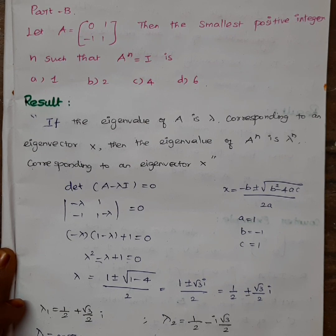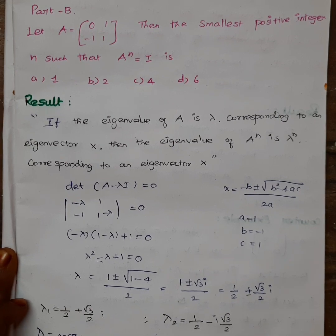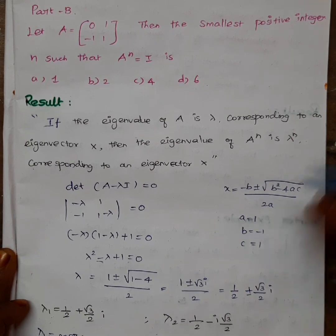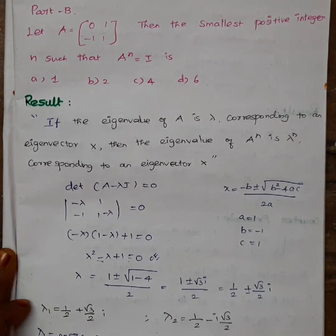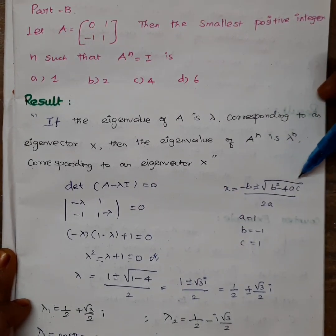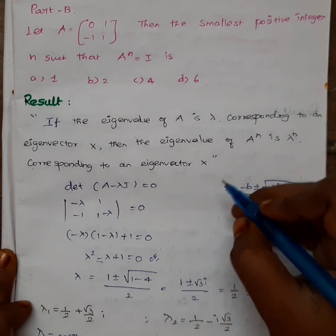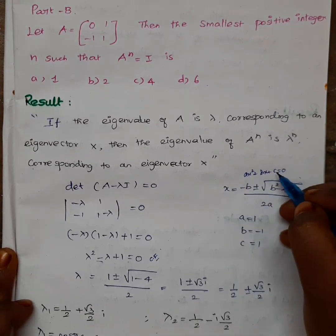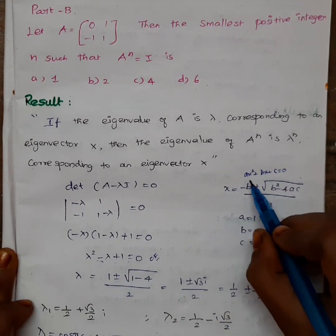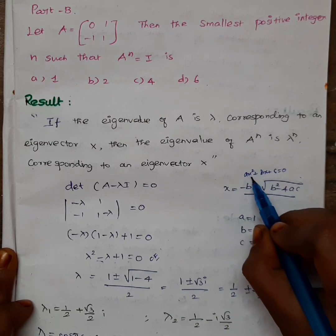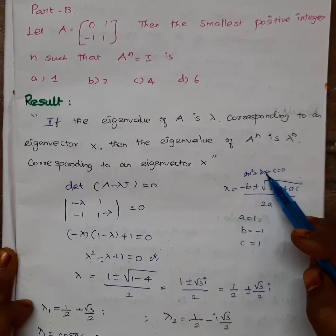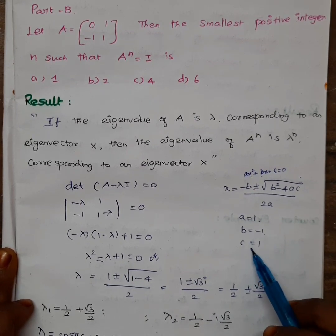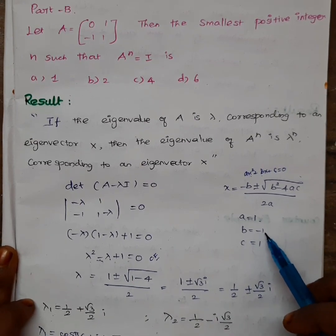That gives us the quadratic equation: lambda squared minus lambda plus 1 equals 0. This is the characteristic equation. Comparing to the general formula ax squared plus bx plus c equals 0: the coefficient of lambda squared is 1 (a=1), the coefficient of lambda is minus 1 (b = −1), and the constant term is 1 (c=1).